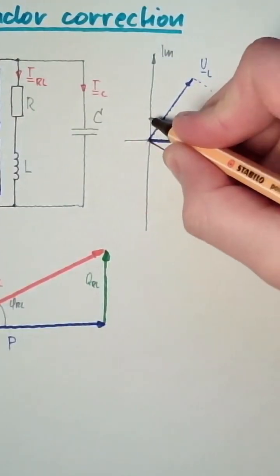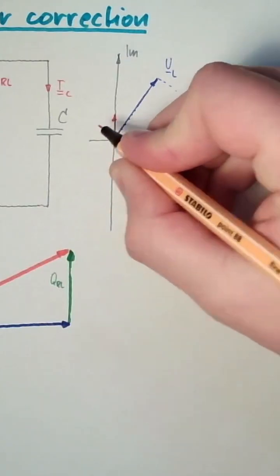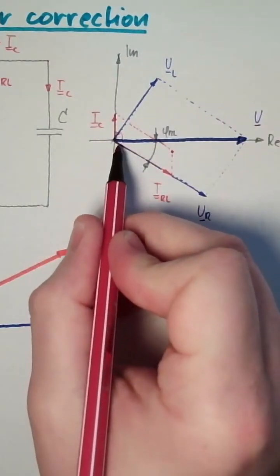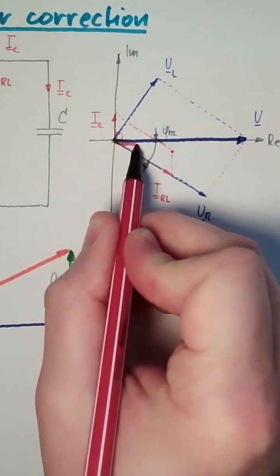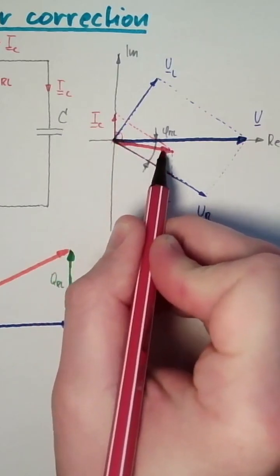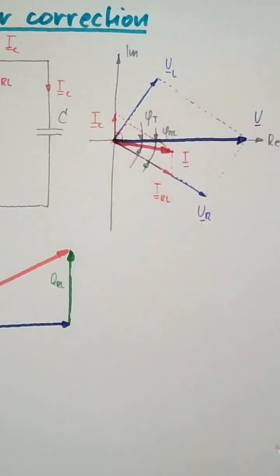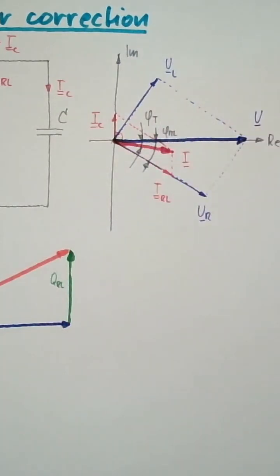What does this look like in the diagram? IC must be now 90 degrees before U. Now let's summarize this. There is a parallelogram. Here is my I now, a new phase shift, which is smaller than our original VRL. This is actually what we wanted, right?